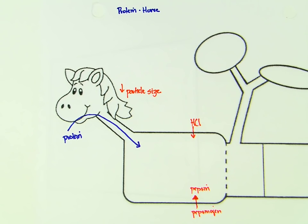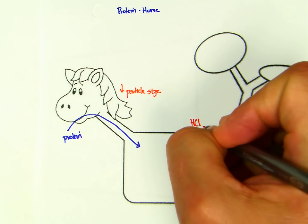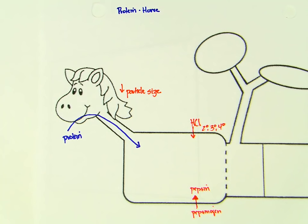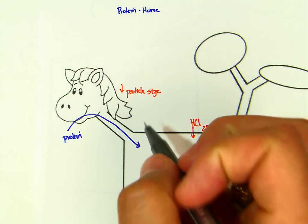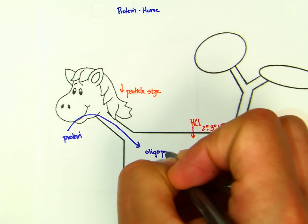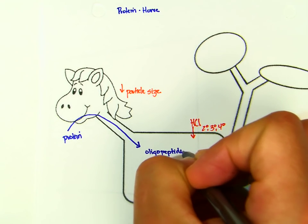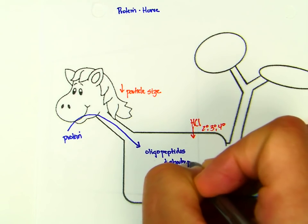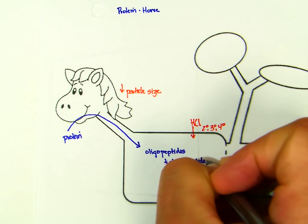By now, you guys should know that HCl and pepsin are capable of doing that. You might take a moment and think about the fact that this is going to be a relatively brief amount of time in the horse, because, again, a smaller stomach, faster rate of passage. And what we're going to end up with is oligopeptides and shorter peptides.